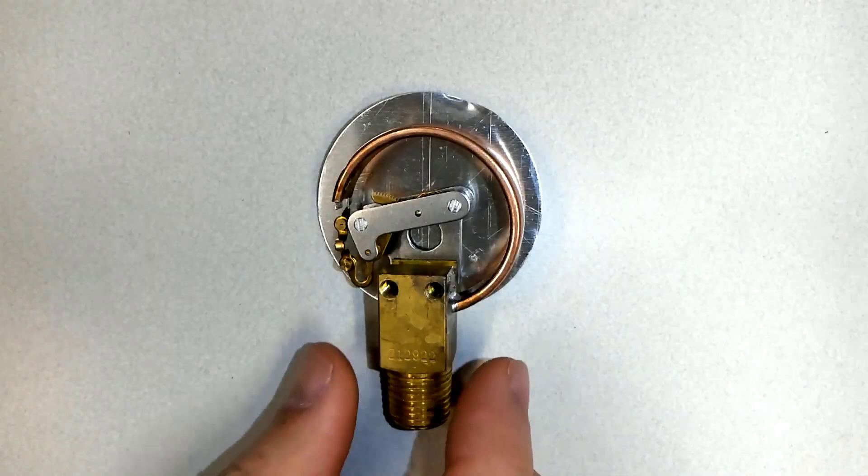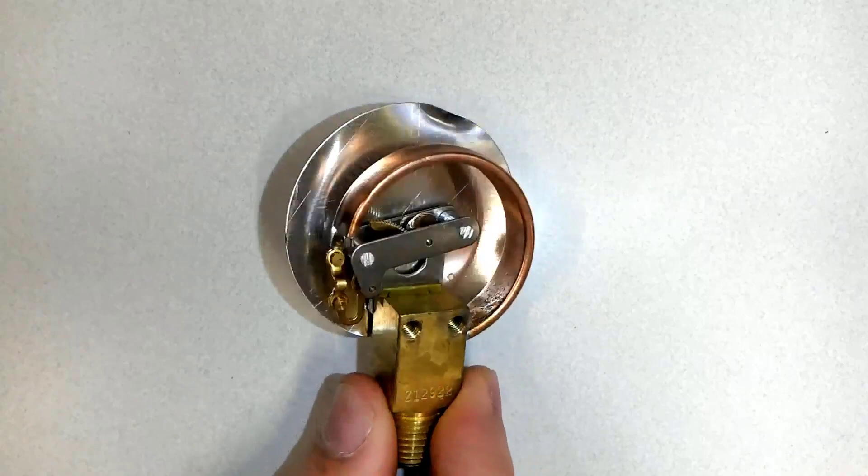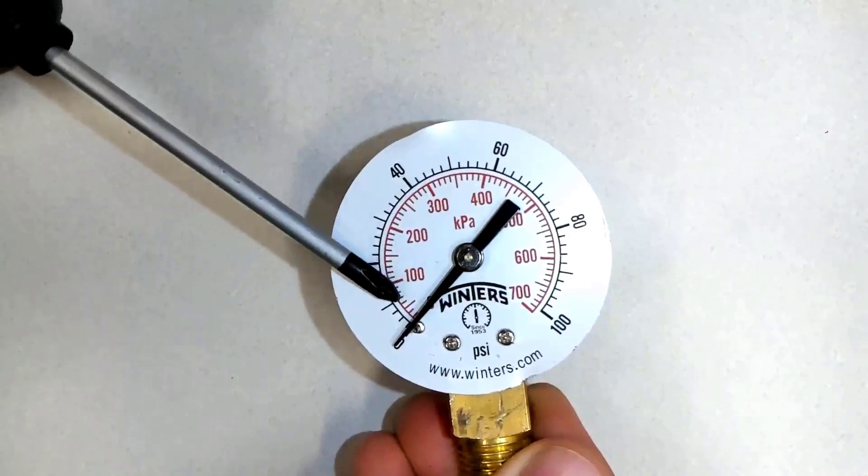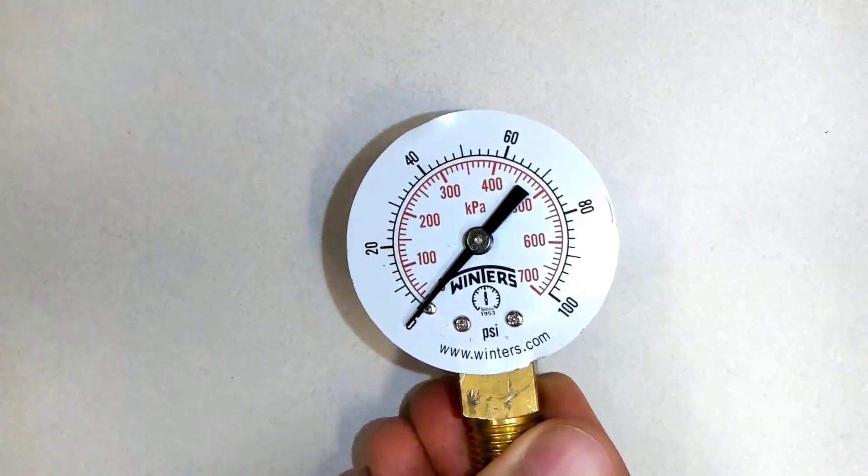This is what is inside the casing of the Bourdon Gauge. Let me turn it to show you - this is the pointer and the face of the Bourdon Gauge.